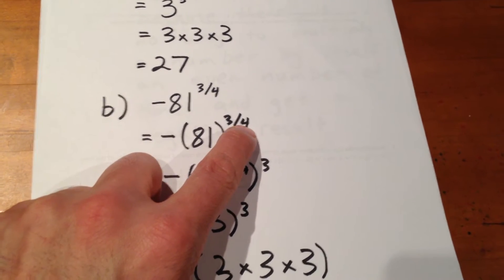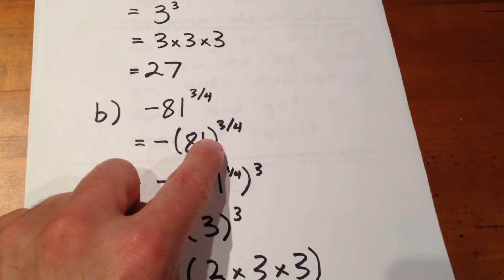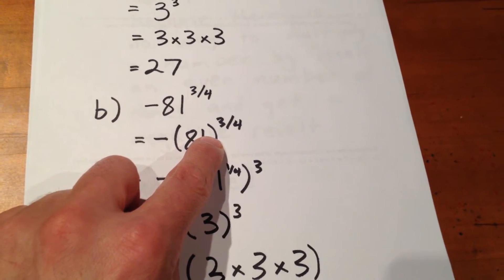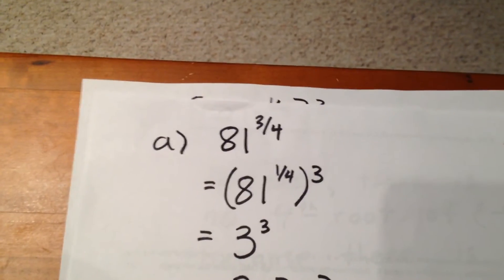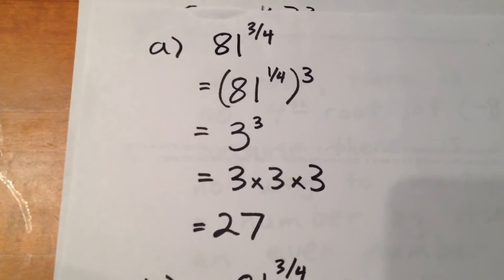And then, when we evaluate that, multiply it by negative 1. Well, we evaluated 81 to the 3 quarters a moment ago. 81 to the 3 quarters is 27.